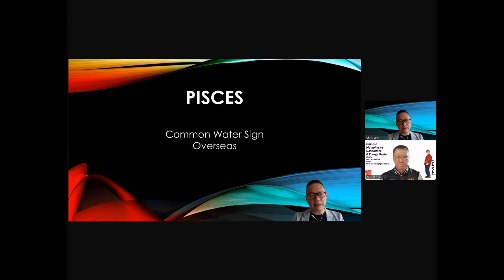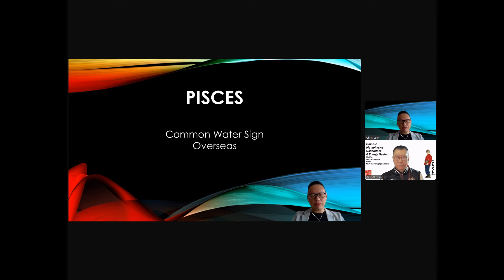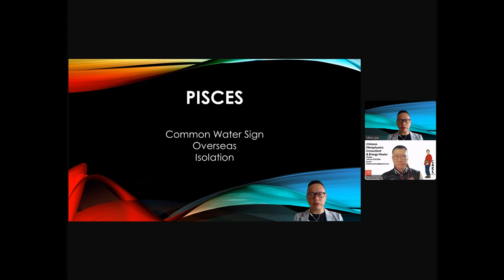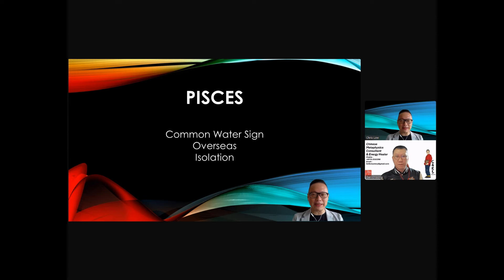Pisces sign is also about overseas. I mentioned Elon Musk earlier — his Venus is in the 12th house. When we talk about Pisces, there's some energy of the 12th house as well, so Pisces also talks about going overseas, long trips. Pisces is also about isolation — going overseas alone, being hospitalized, or in more negative extreme cases, going to jail or an asylum. You are isolated from the rest of the world.